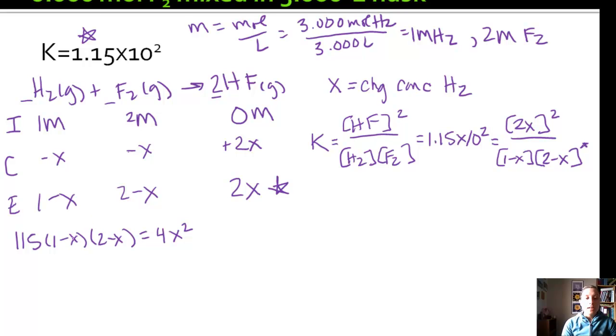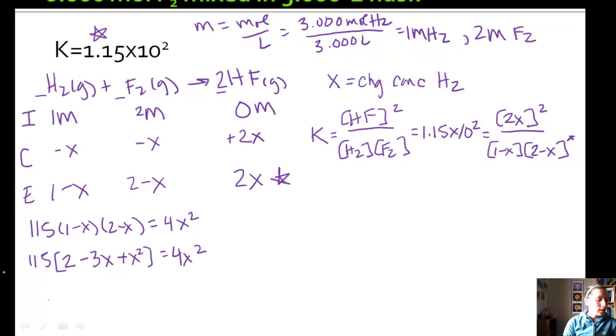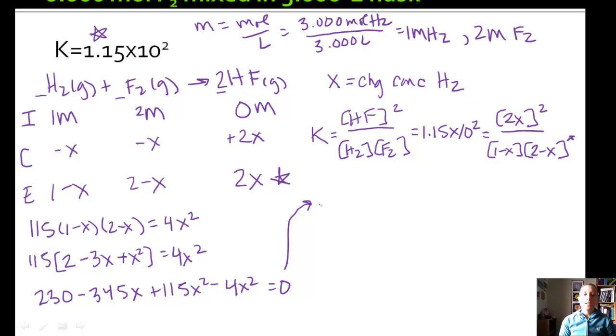So 115 times 1 minus X times 2 minus X equals 4X squared. So I'm just going to simplify that. You FOIL the two parentheses. We get 115 times the quantity 2 minus X minus 2X is minus 3X, minus X times negative X is plus X squared, and that's equal to 4X squared. Now let's multiply the 115. So we've got 115 times 2 is 230 minus 115 times 3 is 345 plus 115 X squared. Let's also get our 4X squared over. So we can write that whole thing as 111 X squared minus 345 X plus 230 equals 0.